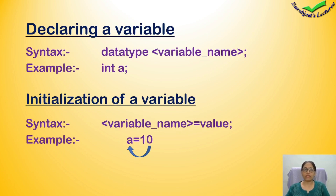When you store any value in a variable, we call it initialization of a variable — we are storing data in the variable. That data can also be taken from the user, which I will explain in the next lecture.